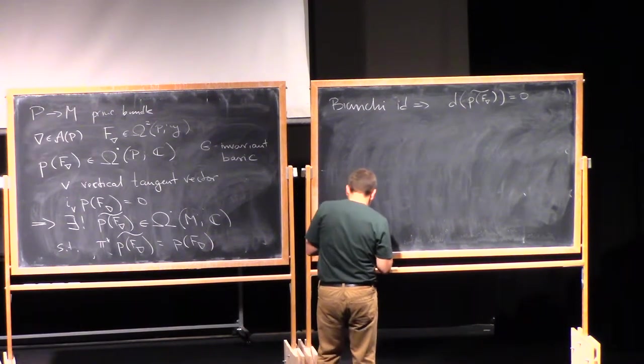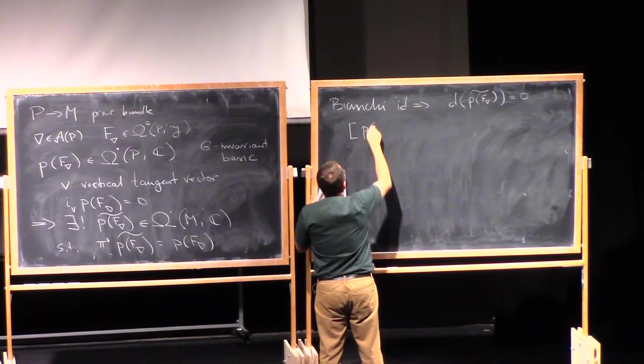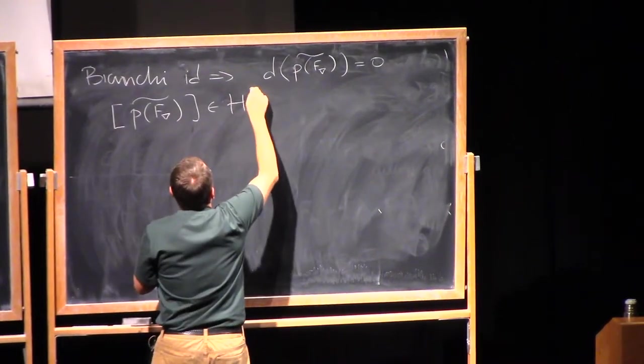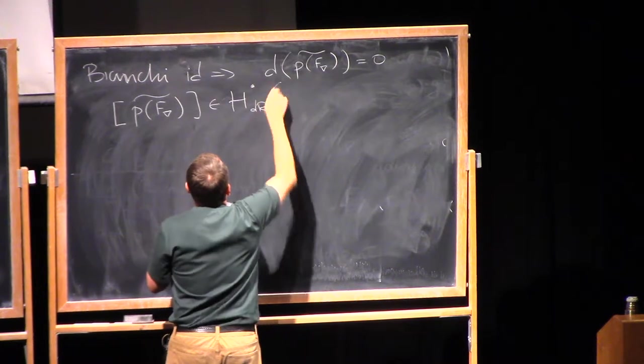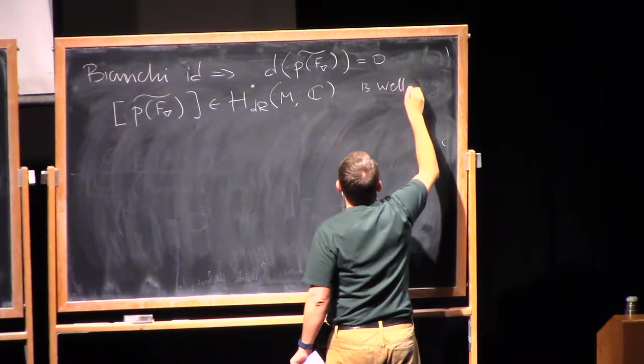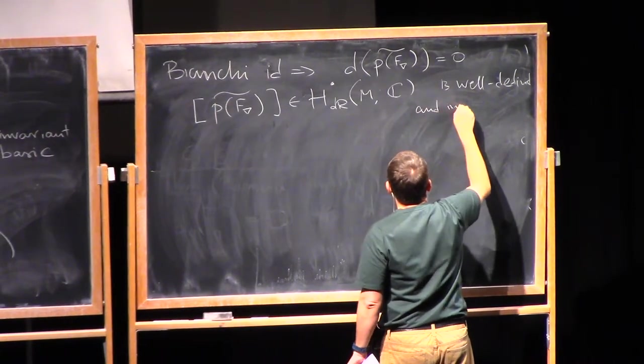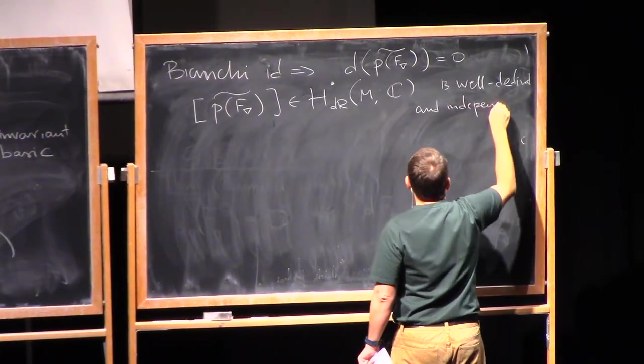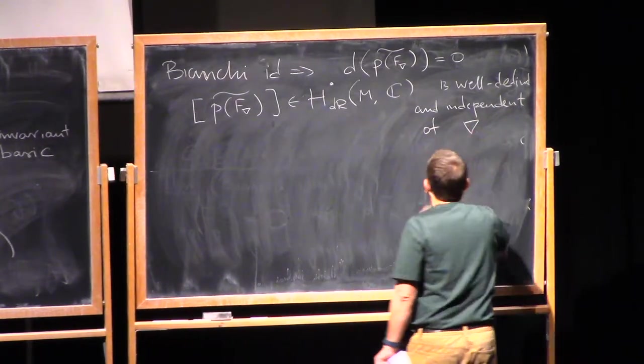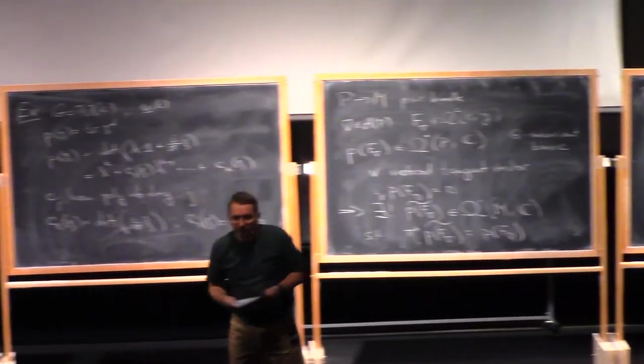So d of P F_nabla tilde is zero. In other words, this means that we can consider the de Rham cohomology class of P F_nabla tilde. So this is in H de Rham of M with complex coefficients. And this is well-defined and independent of the choice of connection nabla. In other words, what we have got is an invariant of a vector bundle or a principal bundle itself.